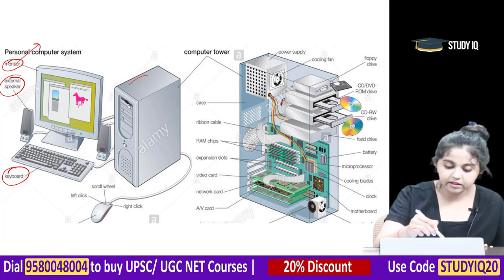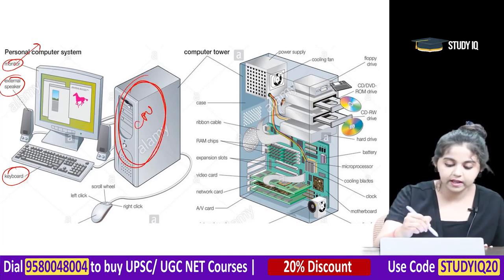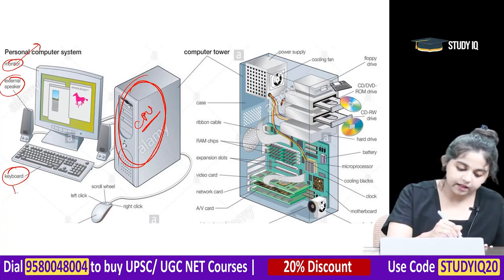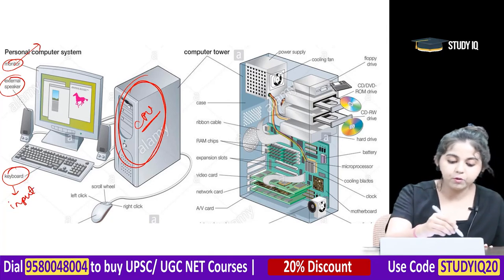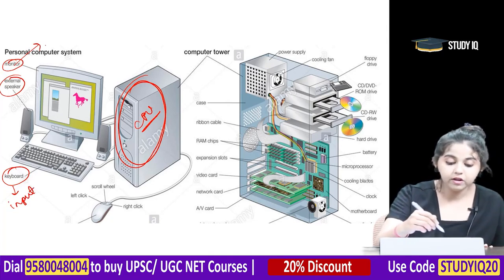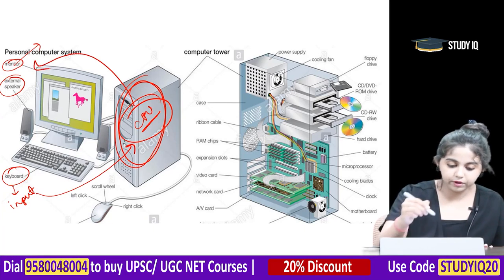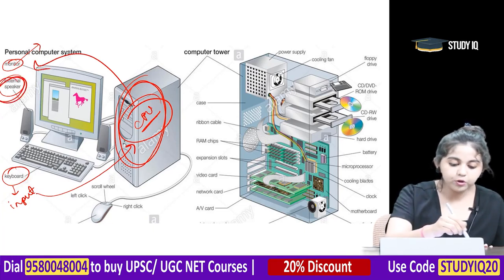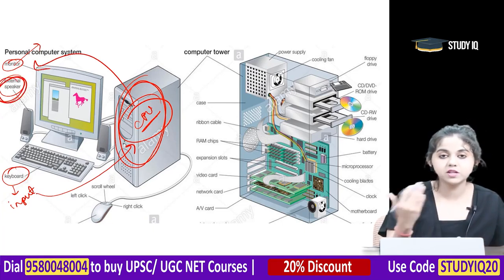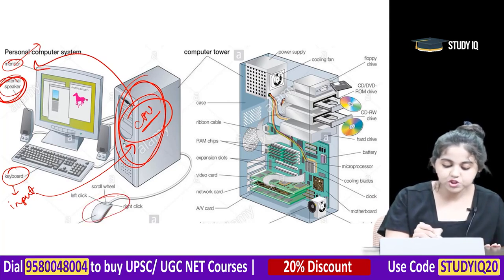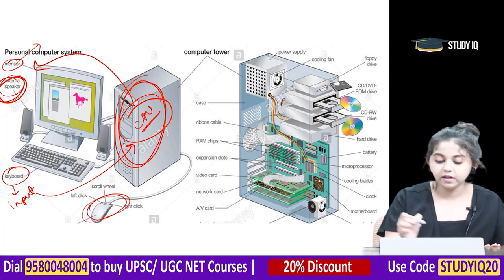A personal computer has a monitor, speakers, a keyboard to input data, and the monitor reflects the output. The CPU processes the data inputted via keyboard and sends it to the monitor. External speakers are another output device. The mouse also helps input data.